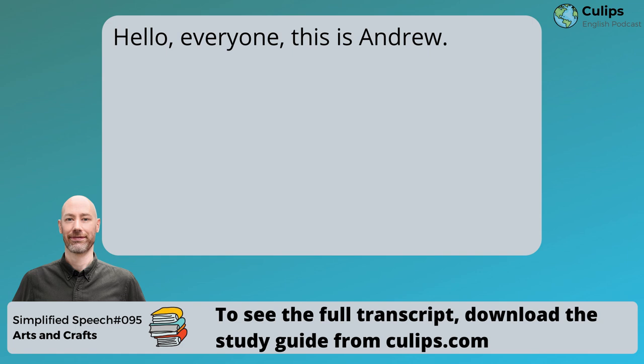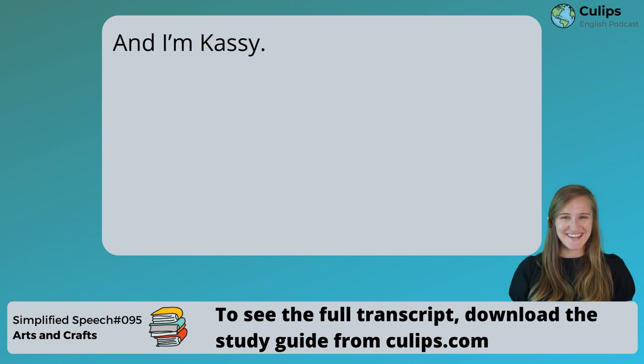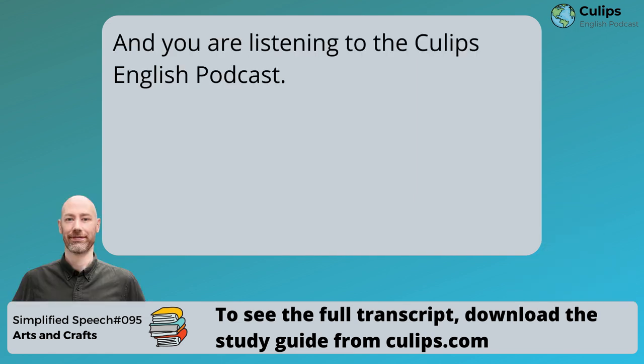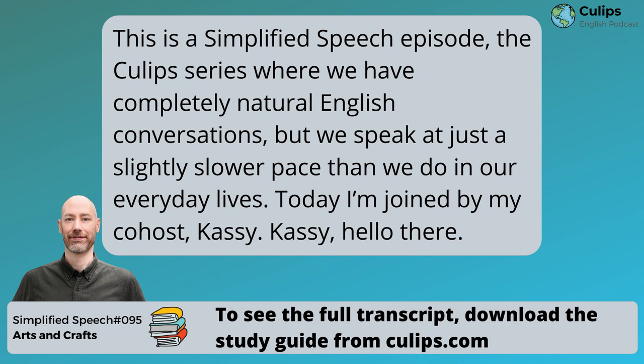Hello, everyone. This is Andrew. And I'm Cassie. And you are listening to the Q-Lips English Podcast. This is a simplified speech episode, the Q-Lips series where we have completely natural English conversations, but we speak at just a slightly slower pace than we do in our everyday lives. Today, I'm joined by my co-host, Cassie.